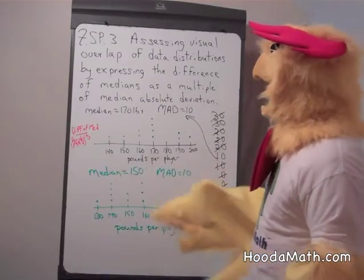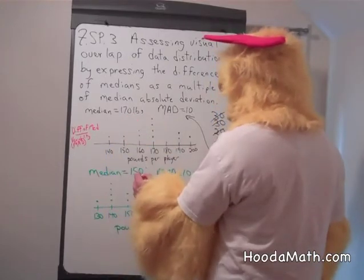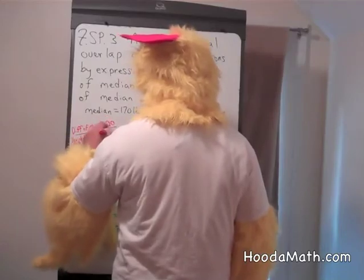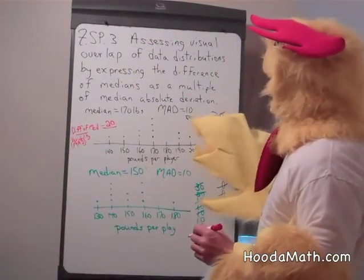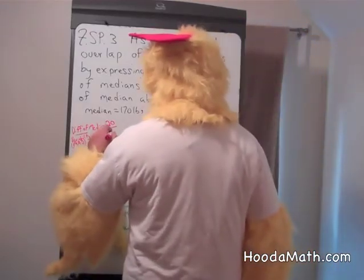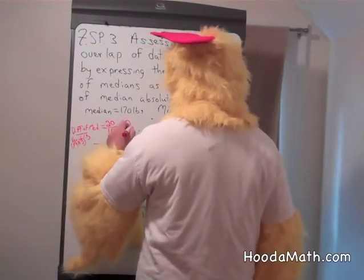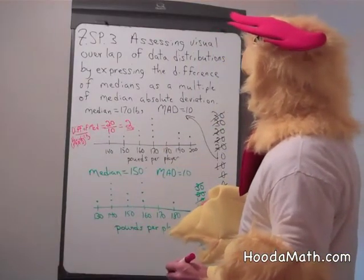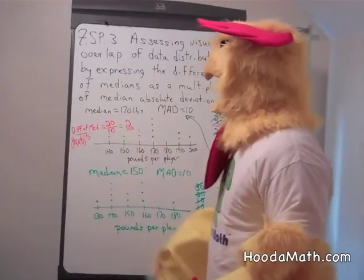Now, if we use the ratio of the difference of the medians, 170 minus 150, what would that be? That's right, 20 pounds. And we put that over the absolute deviation, or median absolute deviation, which is 10 pounds. We find out that we have, that this is a multiple of 2, or the median absolute deviation is one half of the difference of the medians.